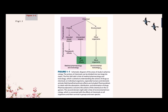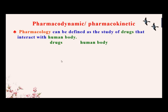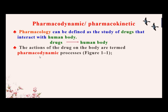Pharmacology includes two major parts: pharmacodynamics and pharmacokinetics. Pharmacology can be defined as the study of a drug that interacts with the human body. The action of the drug on the human body is called pharmacodynamics.